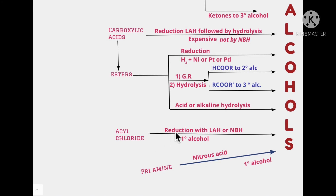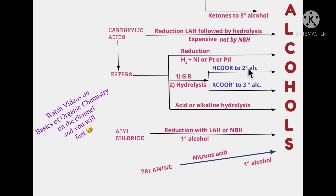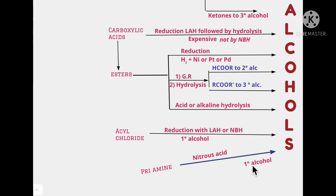Acylchlorides, on reduction with lithium aluminium hydride or sodium borohydride, give us primary alcohol — that's why 1° alcohol is mentioned. We've spoken about primary, secondary, and tertiary alcohols in a separate video, covering also terms like iso, neo, and N. Primary amines, on reacting with nitrous acid, give us primary alcohols. We cannot prepare secondary and tertiary alcohols by this method, which is why specifically 1° alcohol is mentioned.